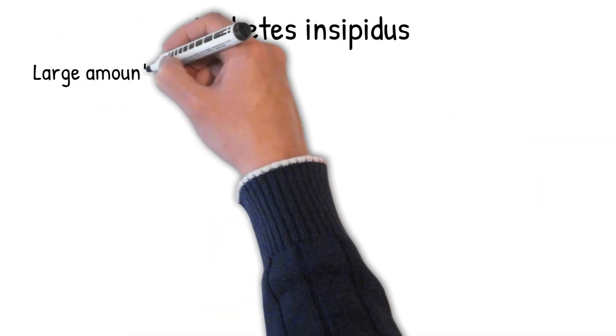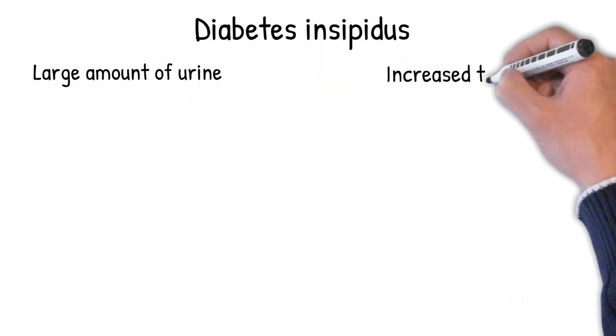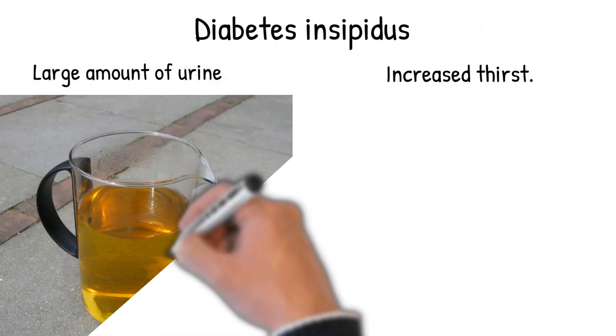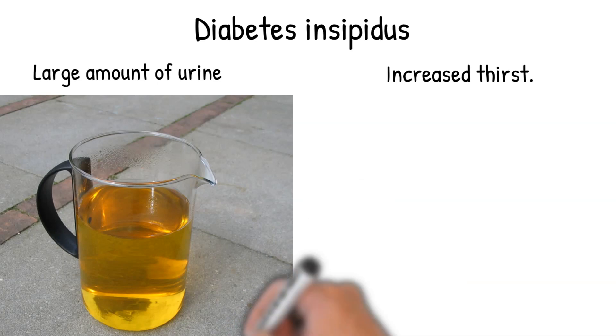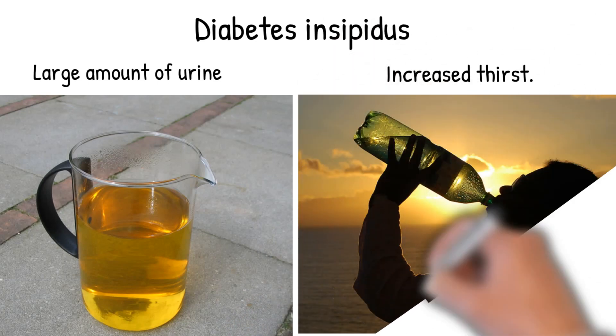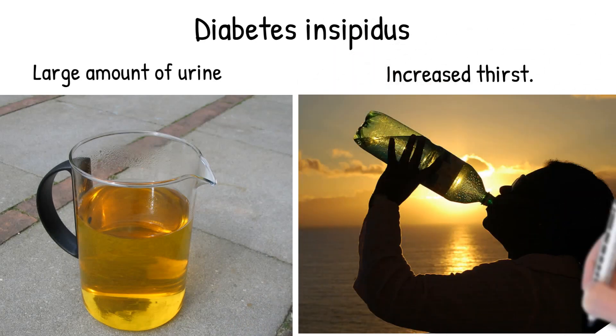Diabetes insipidus is a medical condition characterized by large amounts of urination and increased thirst. The amount of urine produced can be 20 liters per day.